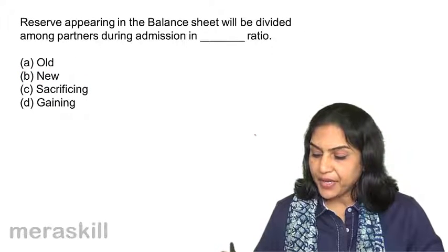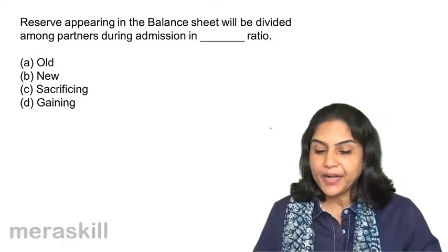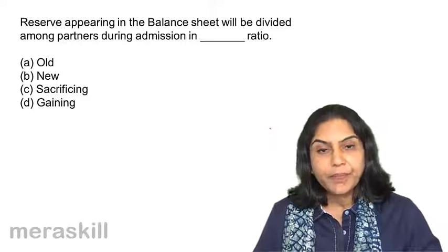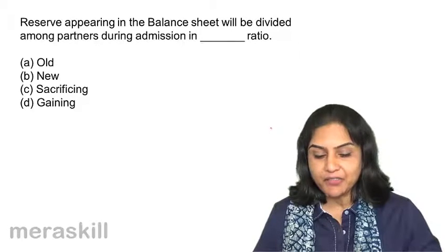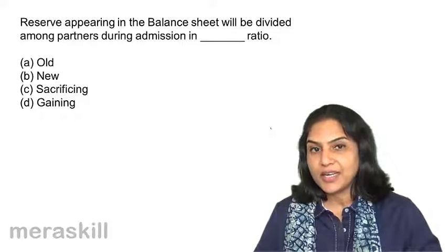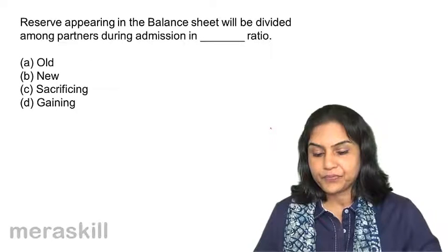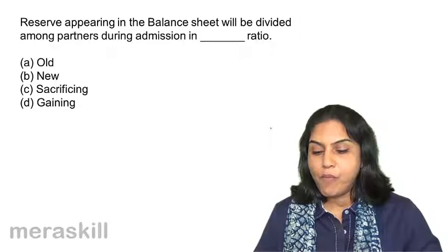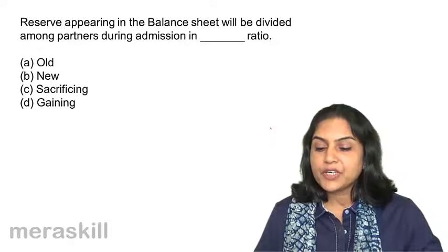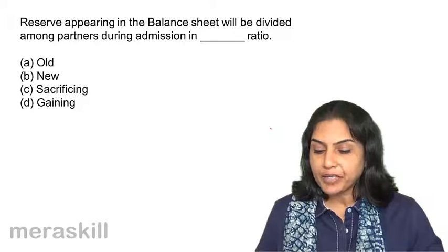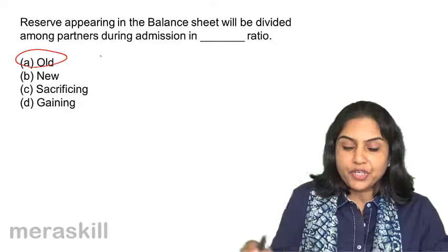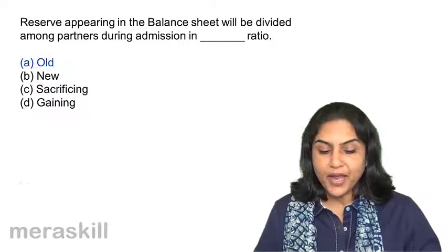Reserve appearing in the balance sheet will be divided among the partners during admission — in what ratio? A. Old ratio. B. New ratio. C. Sacrificing ratio. Or D. Gaining ratio. Reserve appearing in the balance sheet will be divided among the partners during admission in the old ratio. Correct answer should be A, old ratio.